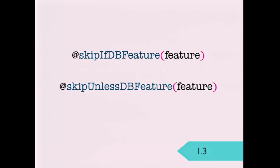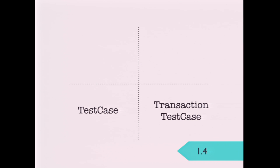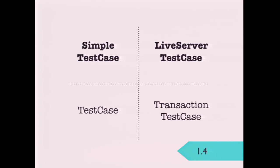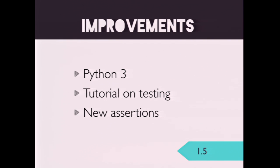There are two useful decorators for internal Django testing and for those who write reusable Django apps: skip a test on a condition, or unless a DB feature is supported by the database. In 1.4 the family of test case classes receives an expansion pack — two new kids on the block: SimpleTestCase and LiveServerTestCase. SimpleTestCase is lighter because it doesn't hit the database, meaning no set up/teardown and no DB queries. LiveServerTestCase runs an HTTP server so you can use a testing framework like Selenium, and it is based on TransactionTestCase. Version 1.5 is when Python 3 support lands in Django, with new assertions added such as comparing JSONs and XMLs.